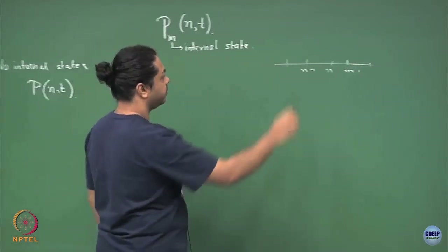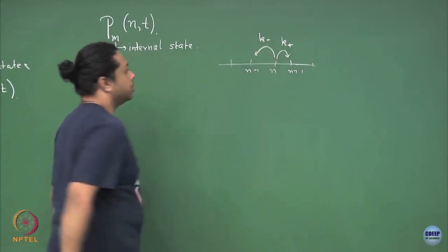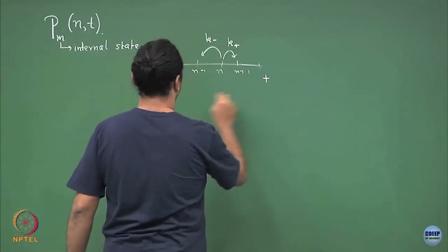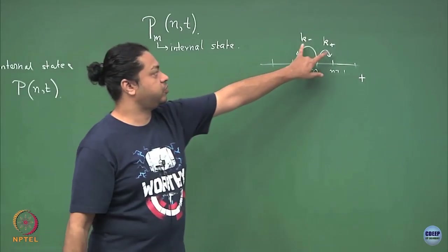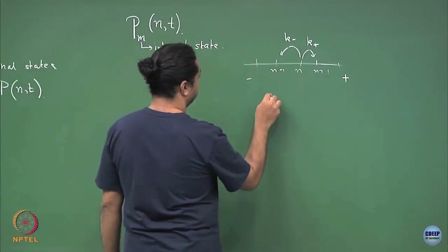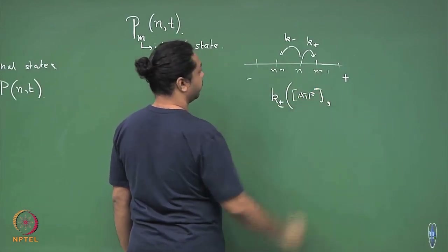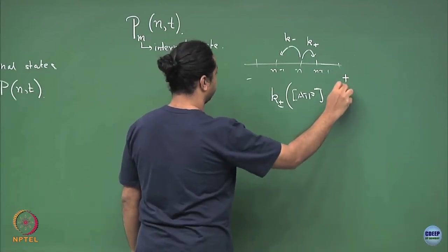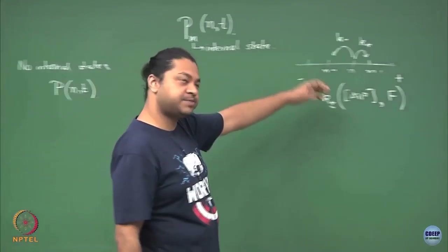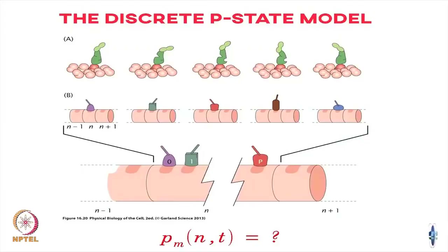We had hopping rates. It could go forward with some rate, it could go backward with some rate, because these motors are directional — they take in energy and move preferentially along one direction, let us say towards the plus end. These rates were different from each other, and they were in principle going to be functions of both ATP concentration as well as the force that you apply on the motor.